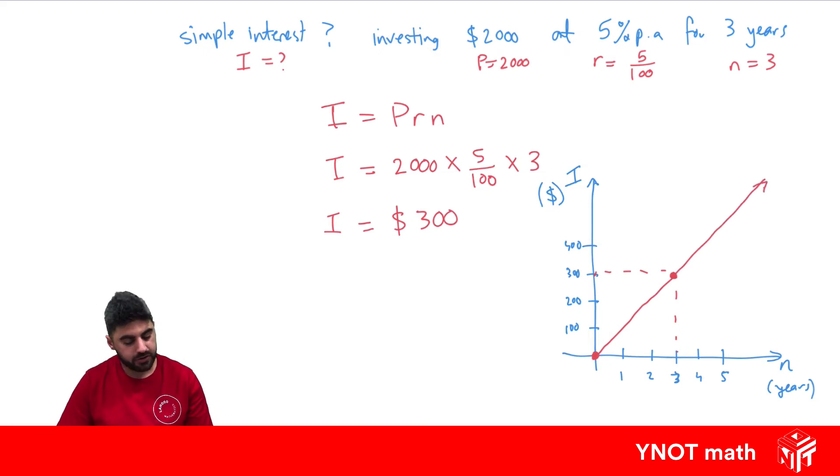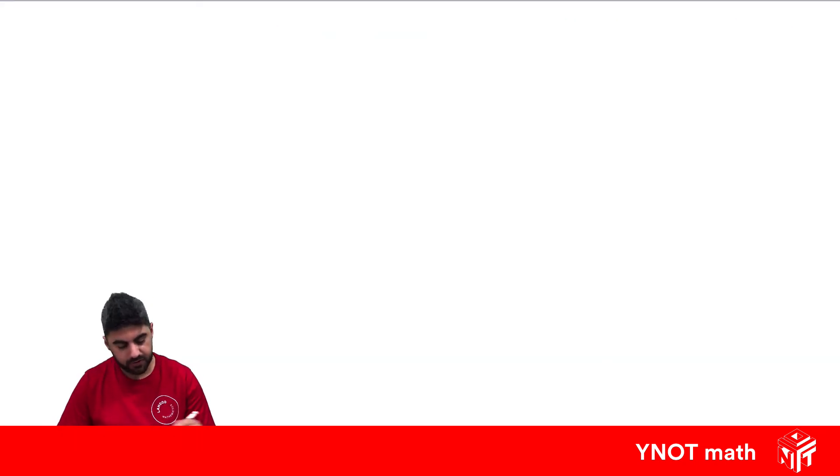And we could use this to find other values, so at four years it would match up to $400. So we could use that graph to find other interests for other time periods. Let's have a look at another example.